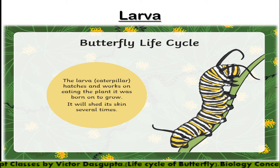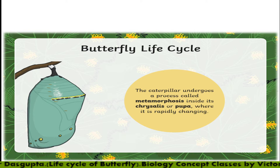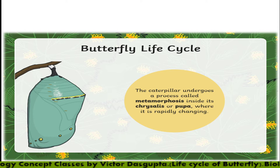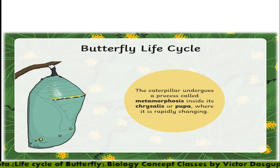The larva will then enclose itself in a cage-like structure — that is the pupal cage. Here you can see the larva converting into a different shape. This is an important stage of its life cycle, where the structural and functional changes take place.